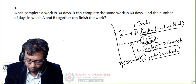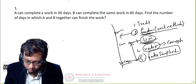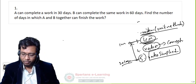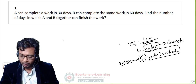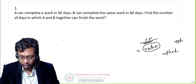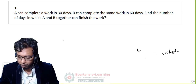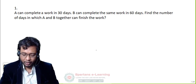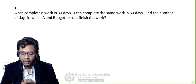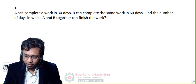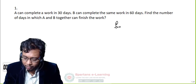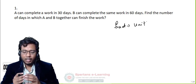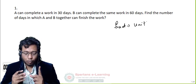Now let's get started. See the first question — maybe you can try to answer it. A can complete a work in 30 days. B can complete the same work in 60 days. Find the number of days in which A and B together finish the work. The first method we will use is the fractional method, also called the unitary method.